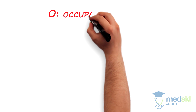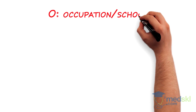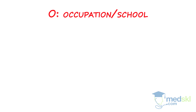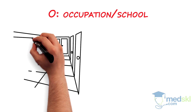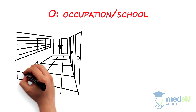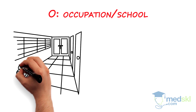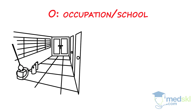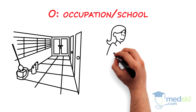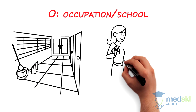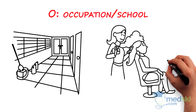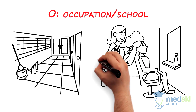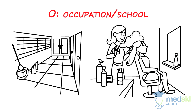O — occupation or school. There might be poor ventilation with buildup of dust, mold, cleaning products, etc. in the school. If she is working, there are many occupational exposures that might exacerbate pre-existing asthma, and also sensitizers and irritants that can induce new asthma.